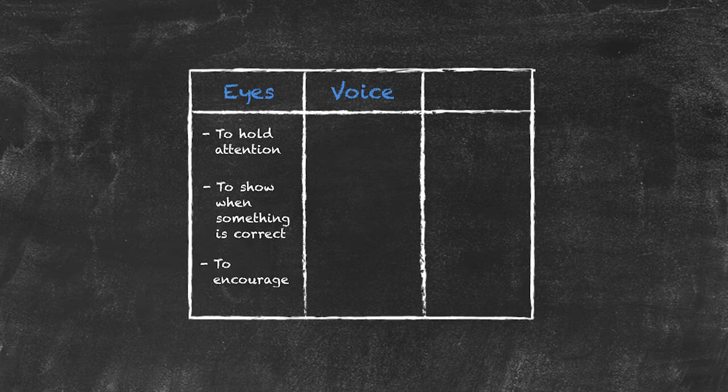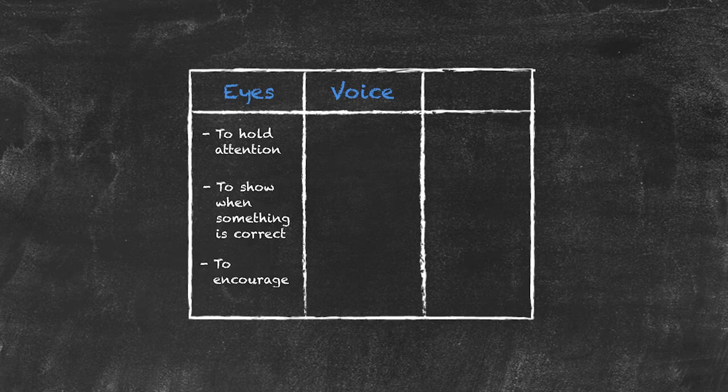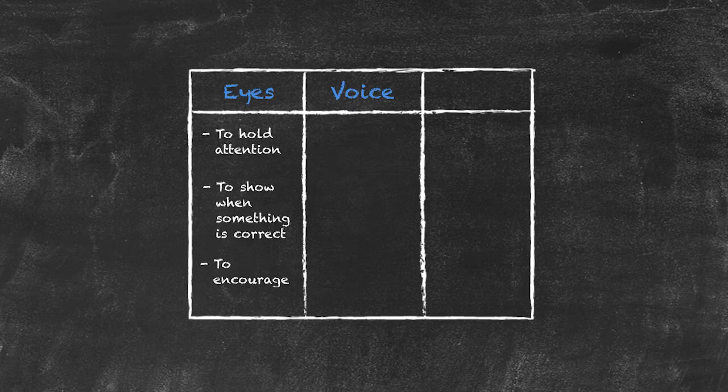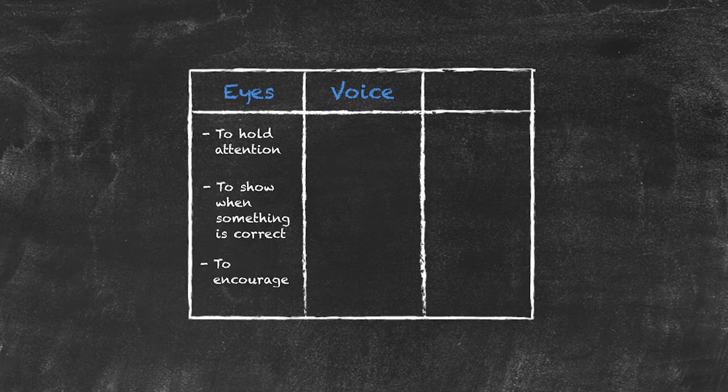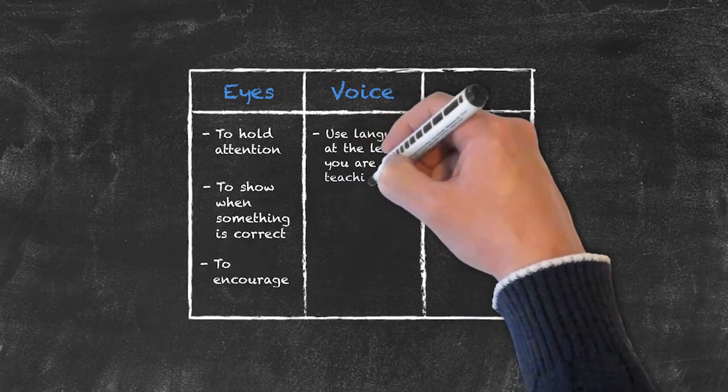In the same way that we write on the board in the form of print, we should try to speak very slowly and very clearly, making each sound as we pronounce those words. Another thing, it is very important that you only use language that is at the level of the students that you're teaching.